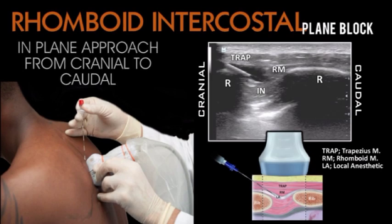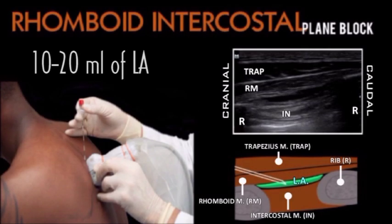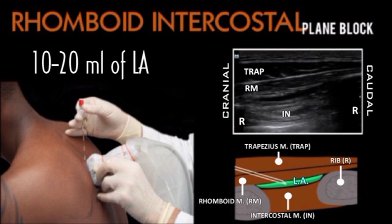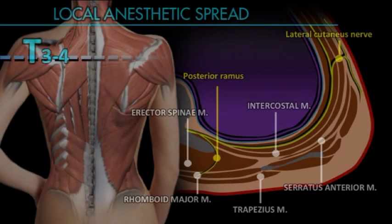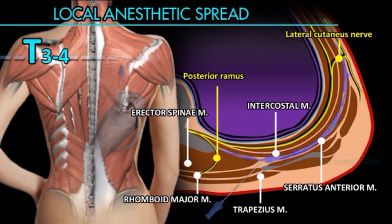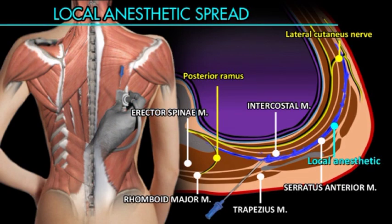Then advance the needle in-plane through the trapezius and rhomboids in a craniocaudal direction. Inject 10 to 20 ml of local anesthetic in the fascial plane between the rhomboid and the intercostal muscles and ribs. The local anesthetic spreads deep to the scapula and serratus anterior muscle, targeting the lateral cutaneous branches, and spreads medially deep to the erector spinae.